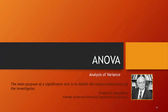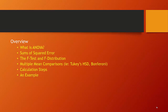Hi, and welcome back. Today we're going to talk about ANOVA, or analysis of variance. ANOVA is a special case for us to analyze the comparison of means. It allows us to compare means between groups where we have more than two categories. We're going to talk about the idea behind ANOVA, what the sum of squared error is, the F-test, the F-distribution, multiple mean comparisons using things like Tukey's or Bonferroni's, the calculation steps, and we'll provide an extensive example. So let's begin.